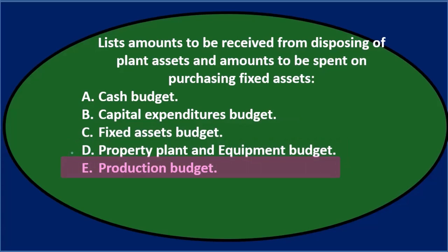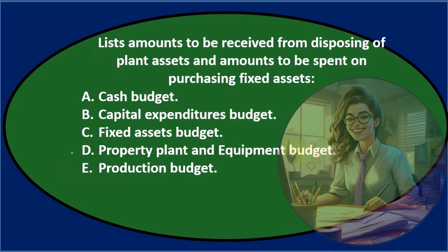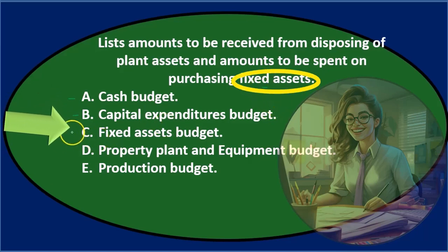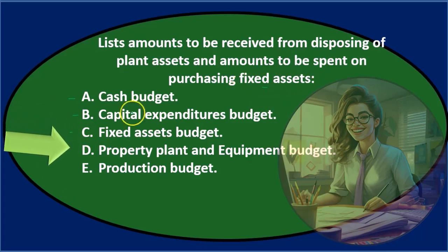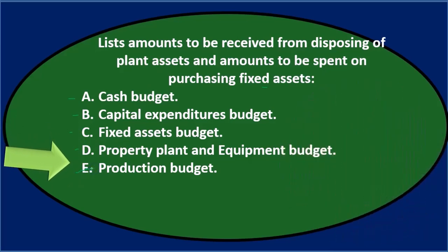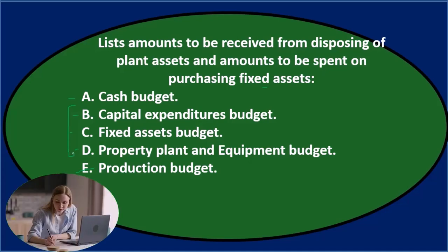Let's go through this again using the process of elimination. Lists amounts to be received from disposing of plant assets and amounts to be spent on purchasing fixed assets. A. Cash budget — it might deal with cash, so maybe we'll keep that. B. Capital expenditures budget — that sounds familiar, so I'll keep that. C. Fixed assets budget — we have fixed assets mentioned, so I'll keep that for now.